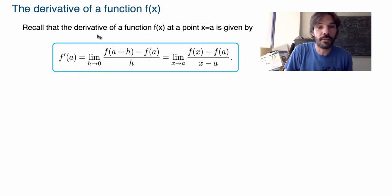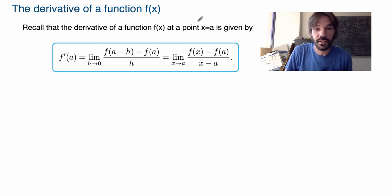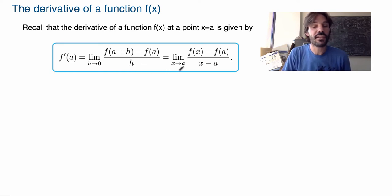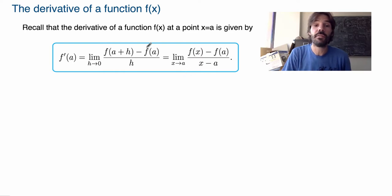Recall that the derivative of a function f at a point x equals a is given by f prime of a, which is the limit as h goes to 0 of the difference quotient f(x+h) minus f(x) divided by h. We can write the exact same limit as the limit as x goes to a of f(x) minus f(a) divided by x minus a. These two definitions are exactly the same.